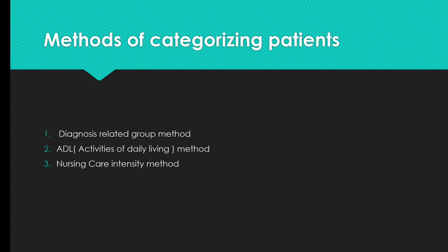Now we look at the methods of categorizing patients. The first method is the Diagnosis Related Group method, where patients are categorized on the basis of their diagnosis. The second is the Activities of Daily Living method, categorizing patients based on care needs for daily activities like hygiene, eating, and grooming. The third is the Nursing Care Intensity method, which covers intensive care, intermediate care, or self-care.